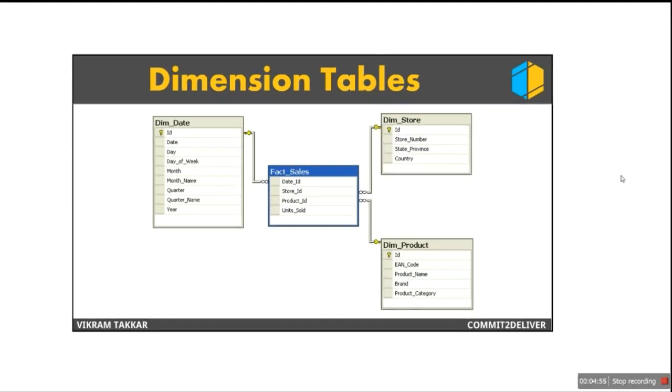Let's take an example of dimension tables. On the screen you can see this is a star schema. We'll get into the star schema details in upcoming videos, but let's consider the tables which are not highlighted in blue. If you can see on the left, there's a dimension date table, and on the right you can see dimension store and dimension product. Let's take an example of the product table. If you see, it contains product name, brand, product category, and it can have different information like product price. This information we generally do not change too much and is not part of the transaction.